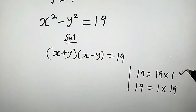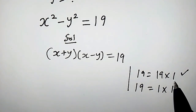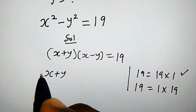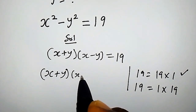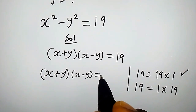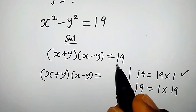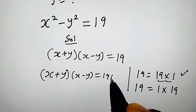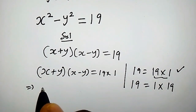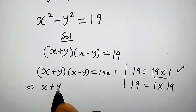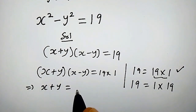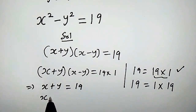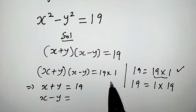We are going to consider the first case. When 19 equals 19 times 1, we replace 19 with 19 times 1, which implies that x plus y equals 19 and x minus y equals 1.